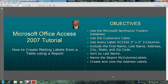This will be accomplished by meeting the following objectives. We'll use the Microsoft Northwind Traders database and the customers table. We'll use Avery label number C2242 with dimensions two inches by two inches with three columns. We'll include the first name, last name, address, city, state, and zip code. We'll sort by last name, name the report 'My Customer Labels', and finally create and view the address labels.